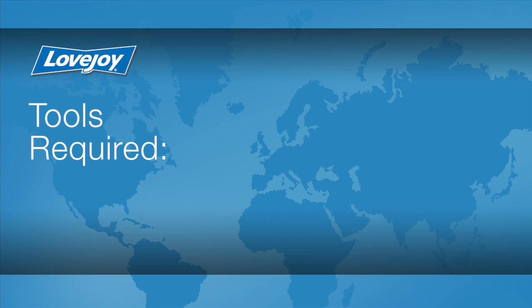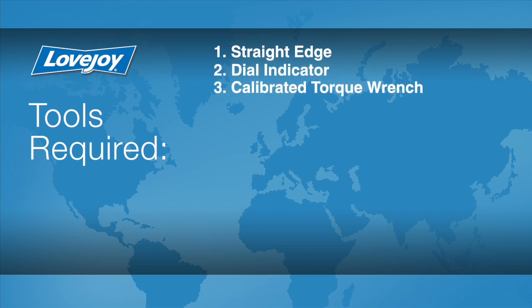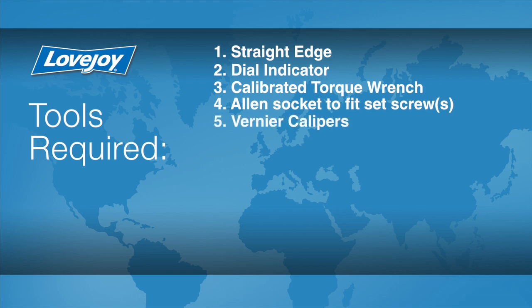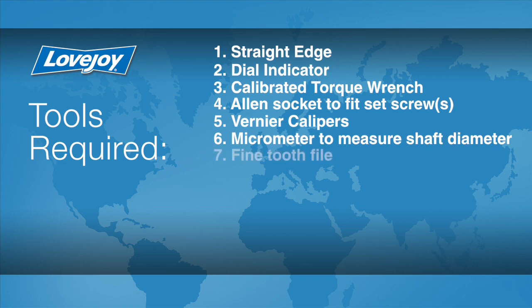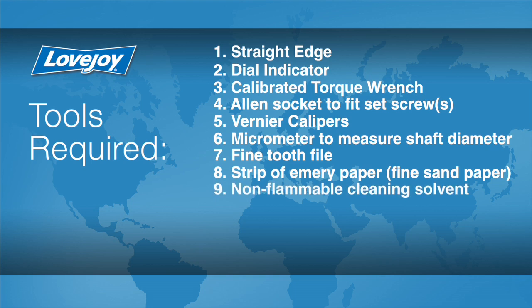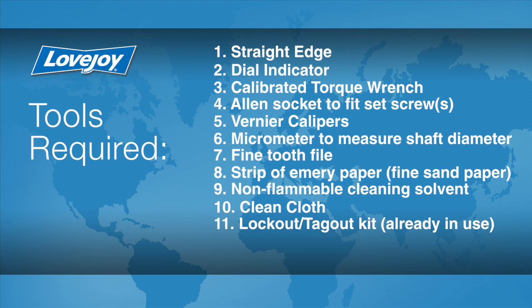Let's look at the necessary tools we will need to perform this installation: a straight edge, a dial indicator, a calibrated torque wrench, Allen socket to fit the set screws, Vernier calipers, a micrometer to measure the shaft diameter, a fine tooth file, a strip of emery paper, non-flammable cleaning solvent, a clean cloth, lockout tagout kit, safety glasses, and rubberized gloves.